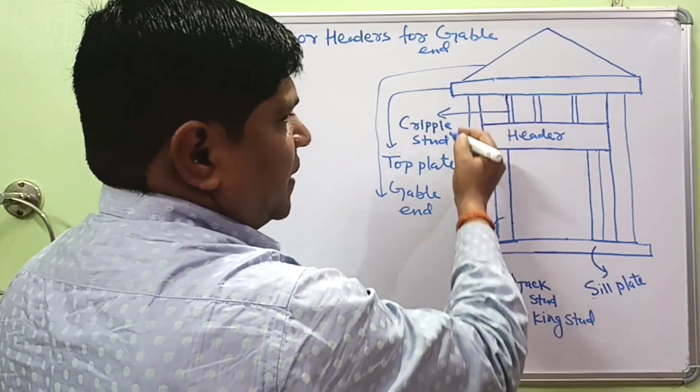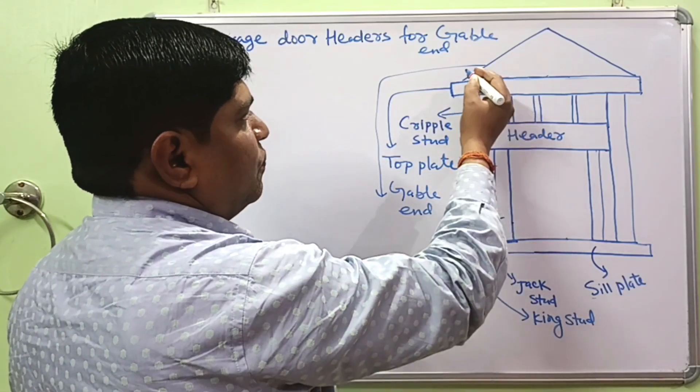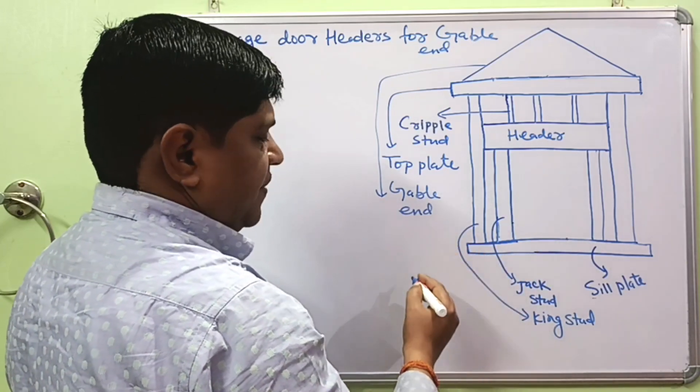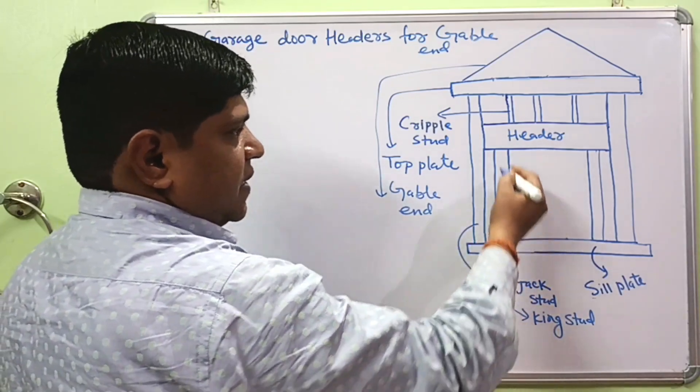You know that most cold region countries like European countries and United States, most houses are made of wooden frame structure. And here is the rough diagram.